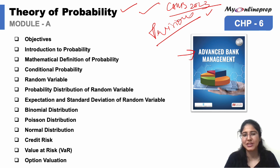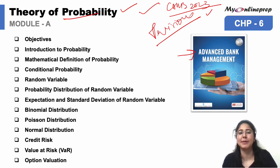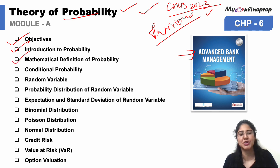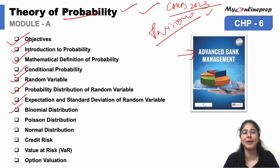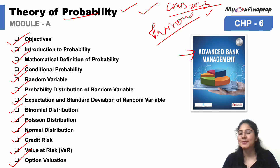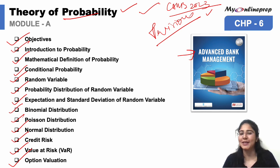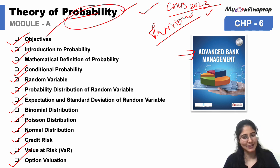Today's chapter is Theory of Probability. In this we will cover objectives, introduction, mathematical definition, conditional probability, random variable, probability distribution, expectations and standard deviation of random variable, binomial, Poisson and normal distribution along with credit risk, valuation at risk and optional value. Let's get started with some of the very important MCQs for the probability chapter.